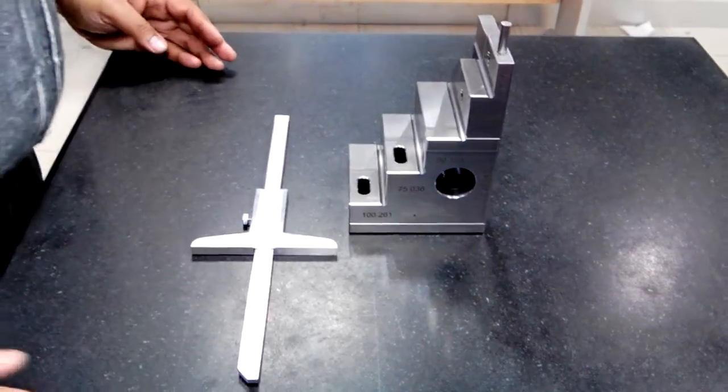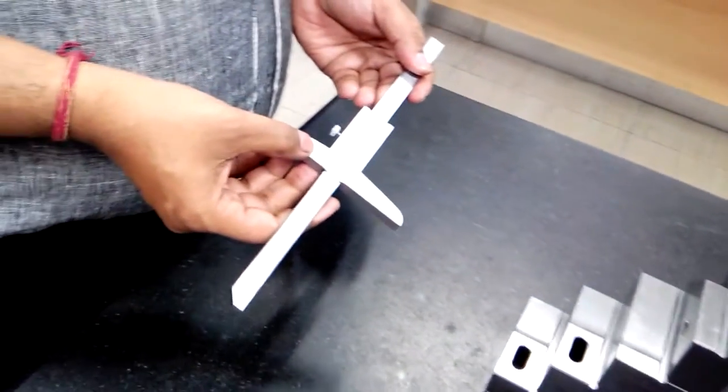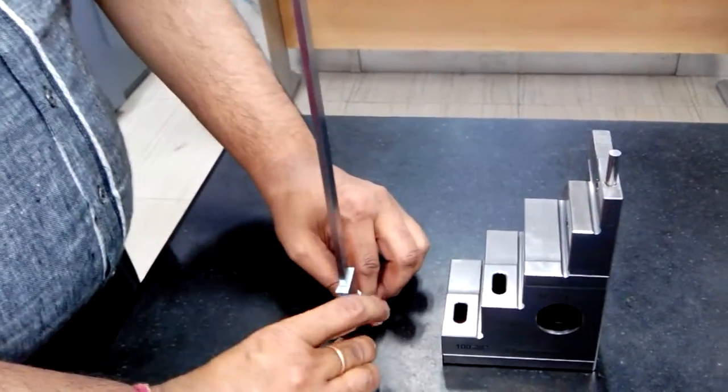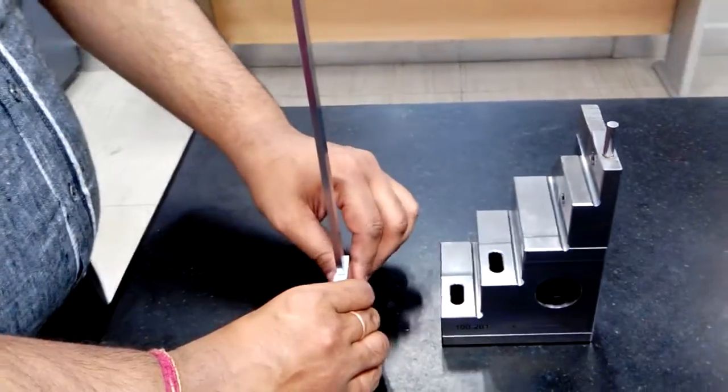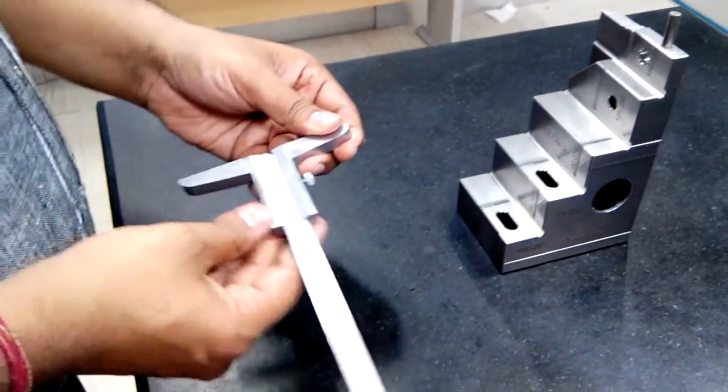I will show you how to calibrate or verify your vernier depth gauge and digital depth gauge. First, you take one step, put it this way on the surface plate, and check for zero error.